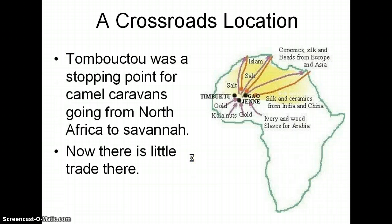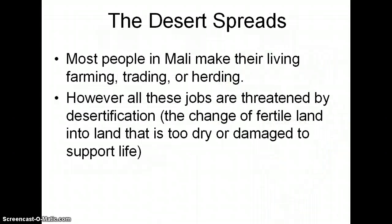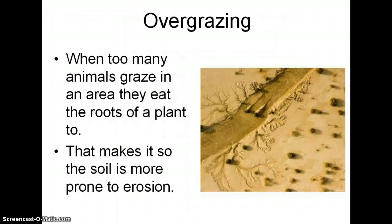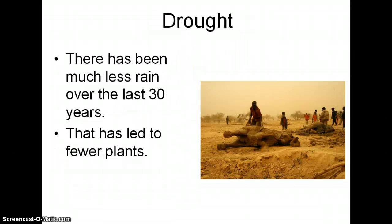Timbuktu was an important stopping point for camel caravans going from North Africa to the savannah. Now there's very little trade there because people no longer have to go up the Niger River. The desert, unfortunately, is spreading. Most people in Mali make their living farming, trading, or herding. However, all these jobs are threatened by desertification — the change of fertile land into land that is too dry or damaged to support life. Some of this is caused by overgrazing; when animals eat the roots of plants, the soil becomes easier to blow around since the roots are no longer holding it in place, leading to more erosion. There has also been much less rain over the last 30 years, leading to fewer plants, and some elephants in the Sahel region have died due to drought conditions.